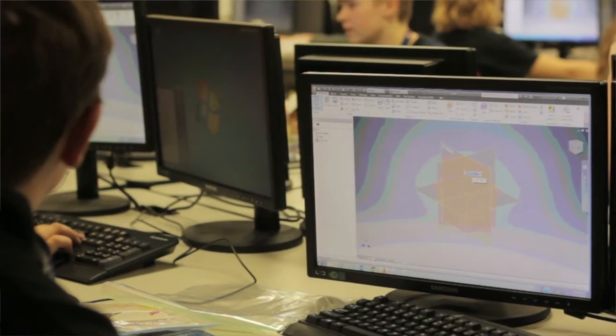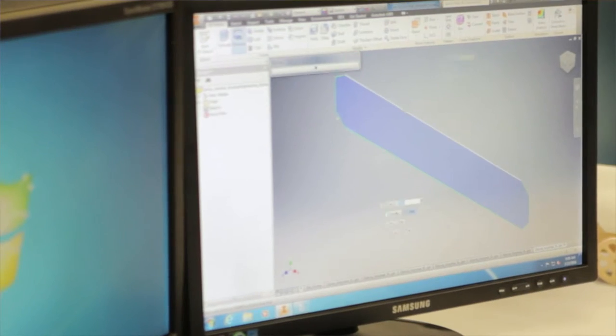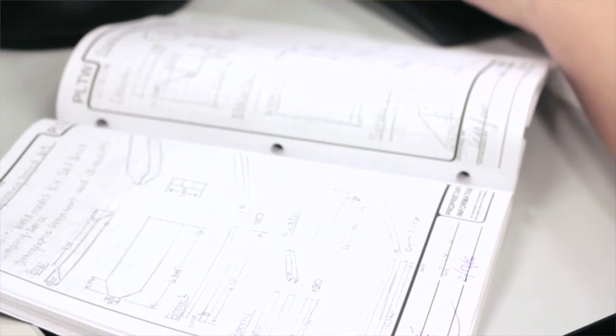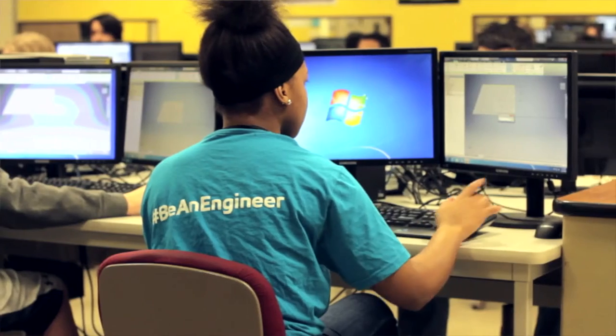They're going to start drafting each piece using Autodesk Inventor, and we'll be 3D printing the parts that they actually make to add to the model. It's ExxonMobil's program, Be an Engineer.